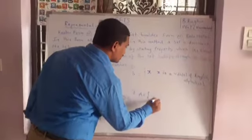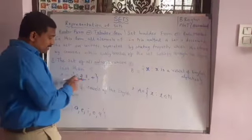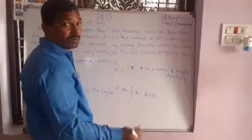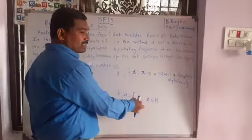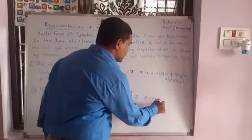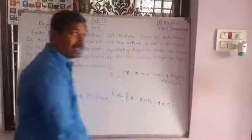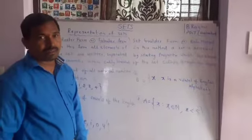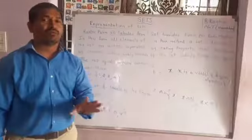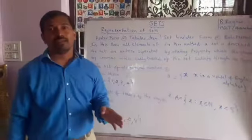Let us take another example: X such that X belongs to N and X is less than 5. X is an element — we assume X is an element, and X is a natural number less than 5. Now, write 3 to 4 sets as exercises and write those sets in both roster form and set builder form.